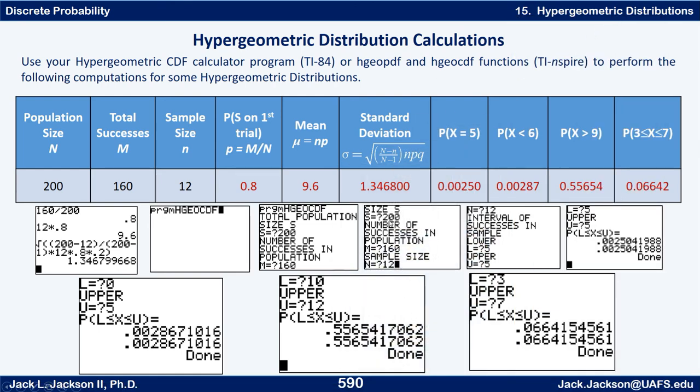And you do the same thing for the others. Every time the s is 200, the m is 160, the n is 12. What you just keep changing is l and u. So for less than six we're going from zero to five. For greater than nine we're going from 10 up to the sample size which is 12. For between three and seven we're just going from three to seven because they're both included.